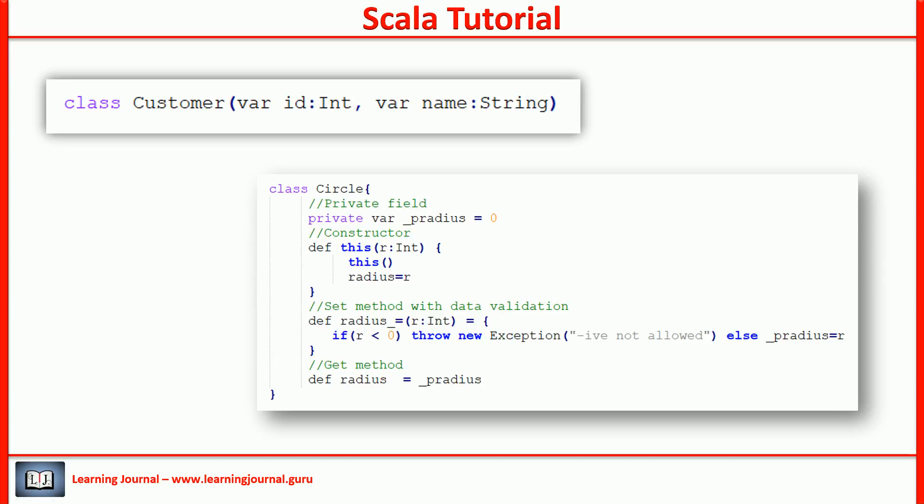When you don't need to implement the validation, you can use a concise code. A single-liner class definition. We did use that syntax for the customer class. Right? When you need to add a validation, you can modify your code and put validation in place.